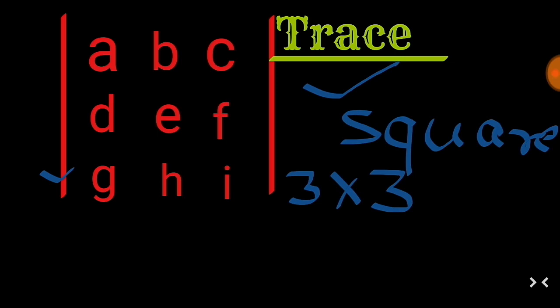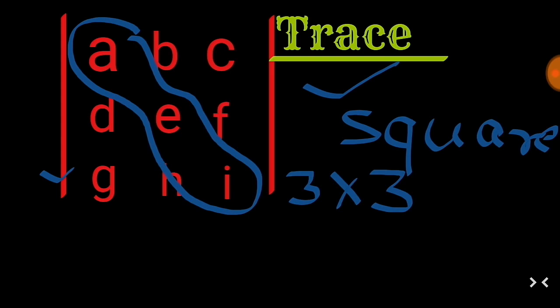we have to sum the diagonal elements of the matrix because trace is the sum of the diagonal elements. So the trace is given by the sum of the diagonal elements, that is equal to a plus e plus i.